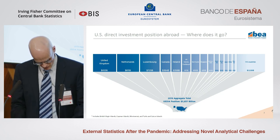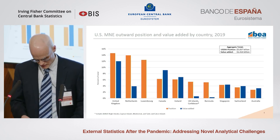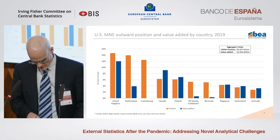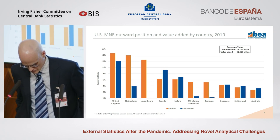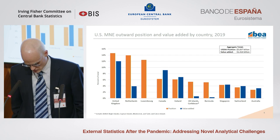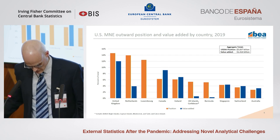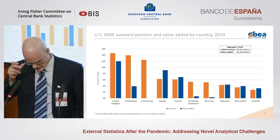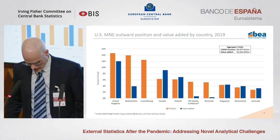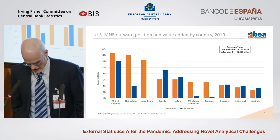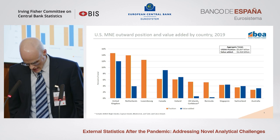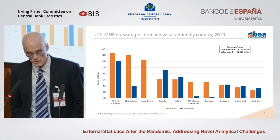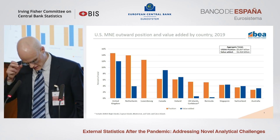Why is this investment so concentrated? The answer is the growth in the use of holding companies by U.S. multinationals as the first entity in their ownership chains. These holding companies tend to be established in countries with advantageous tax or regulatory regimes, and they then own the rest of the foreign affiliates down the chain.